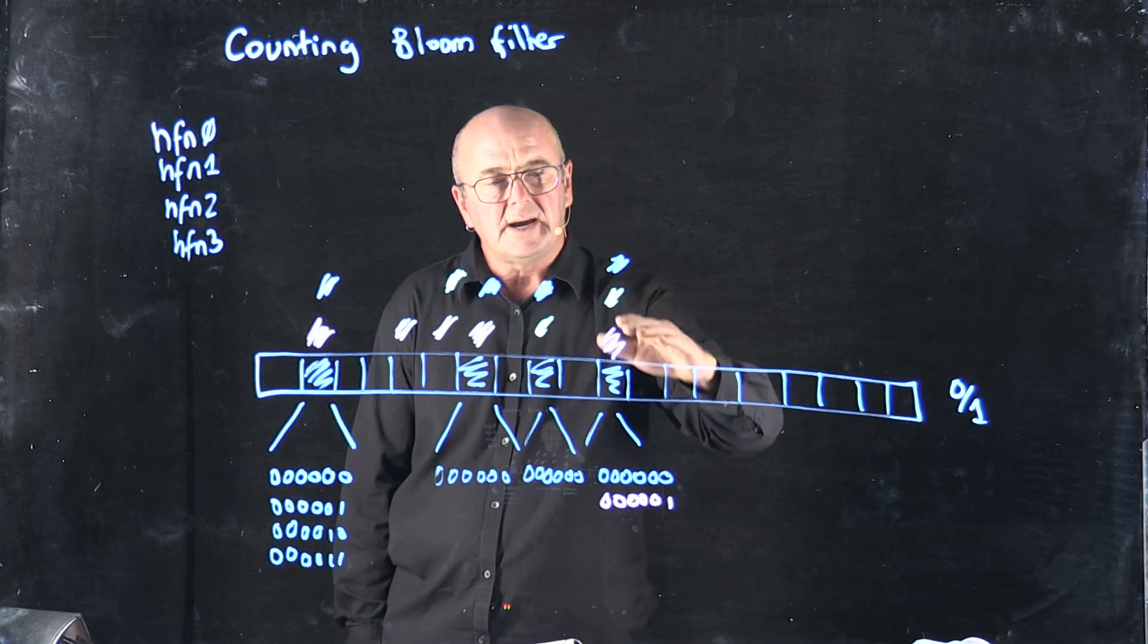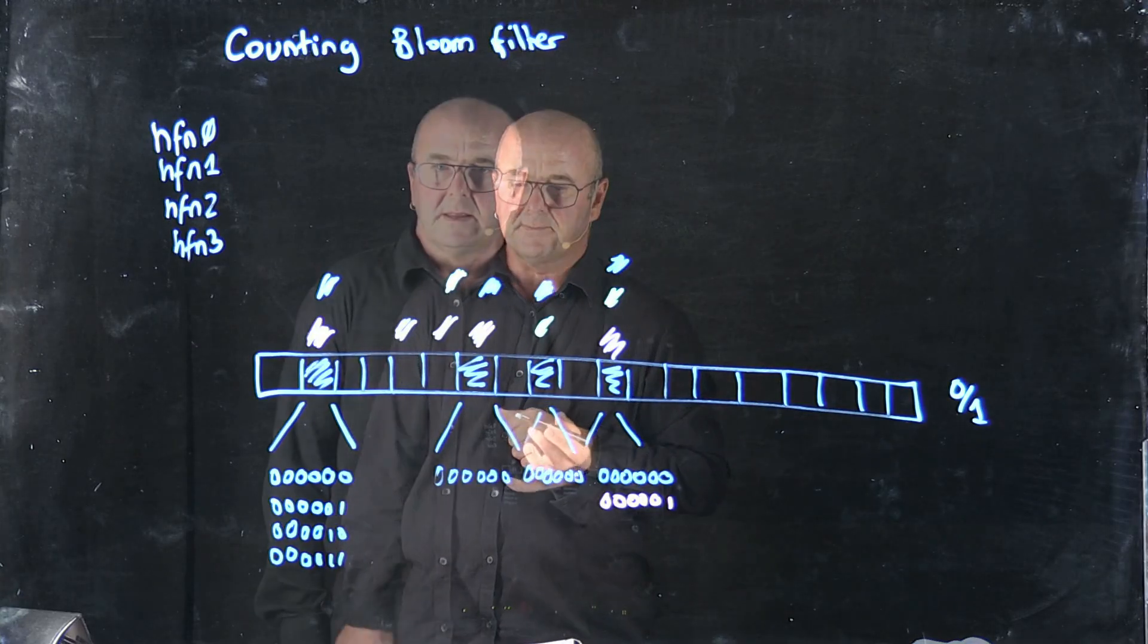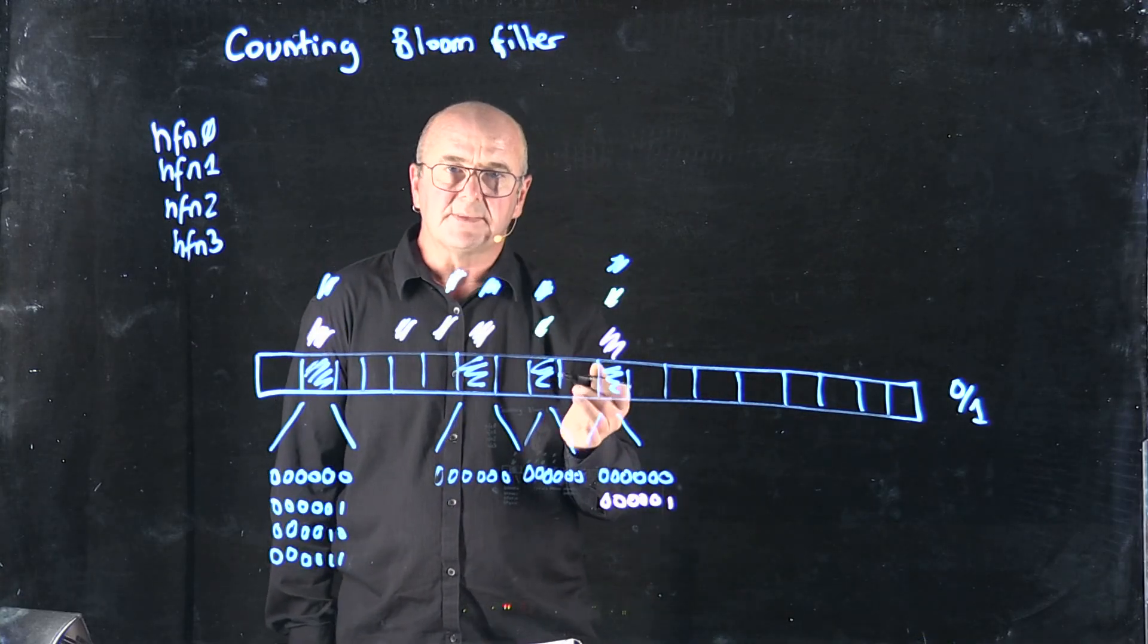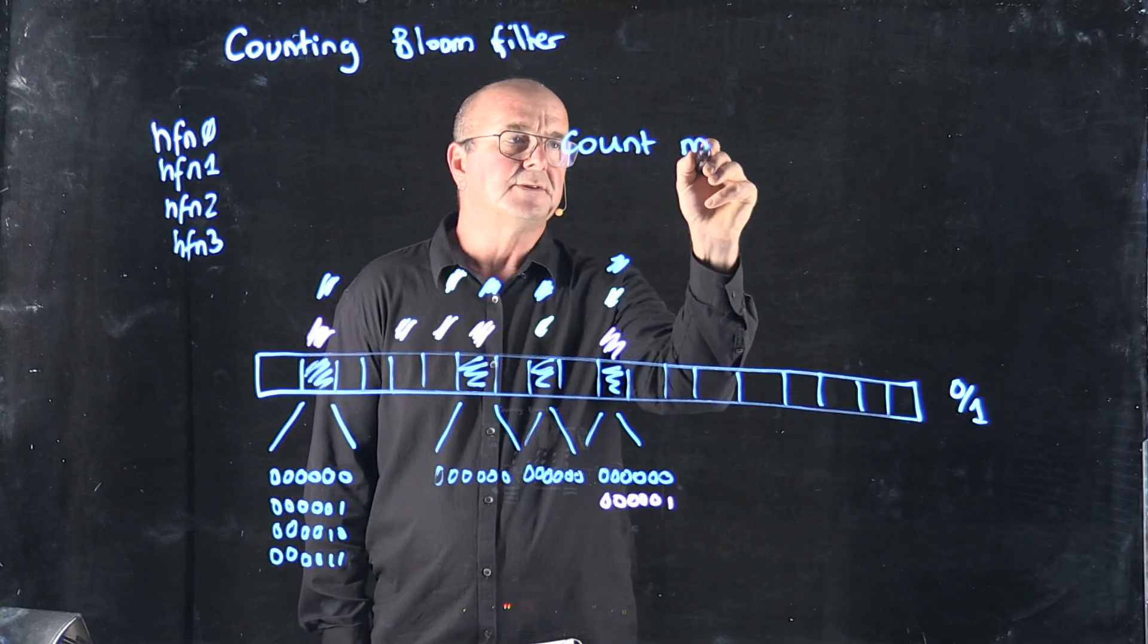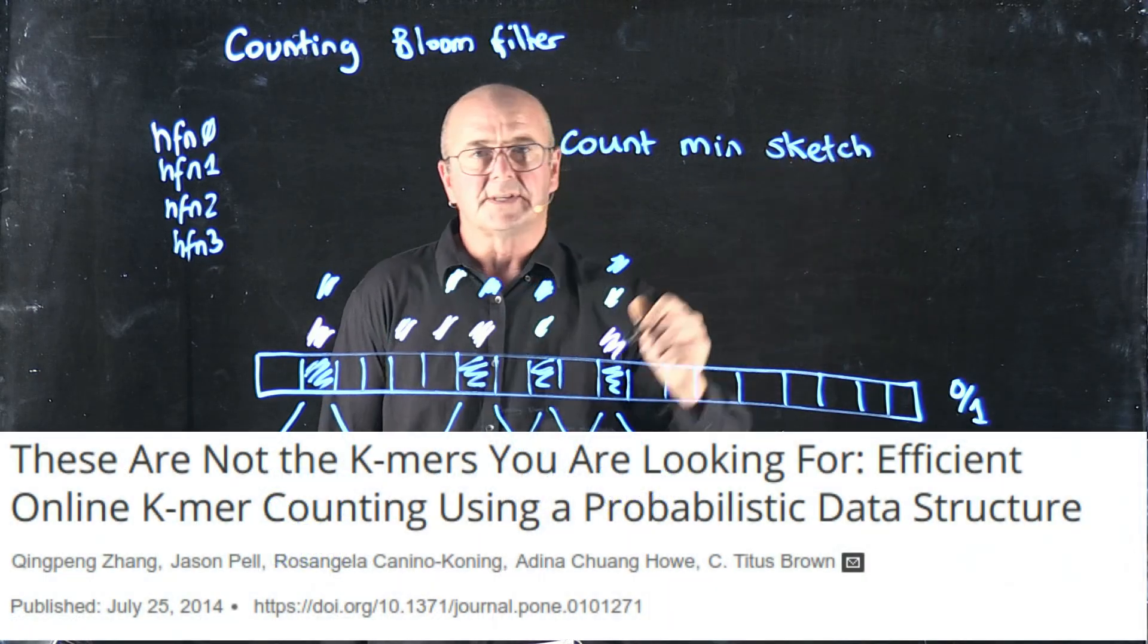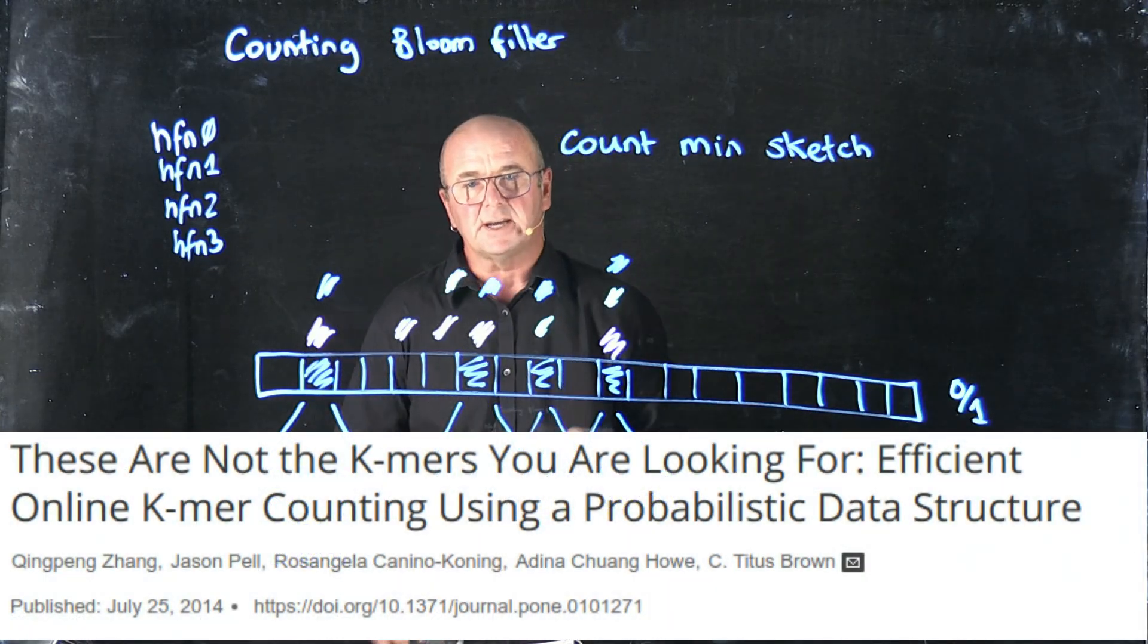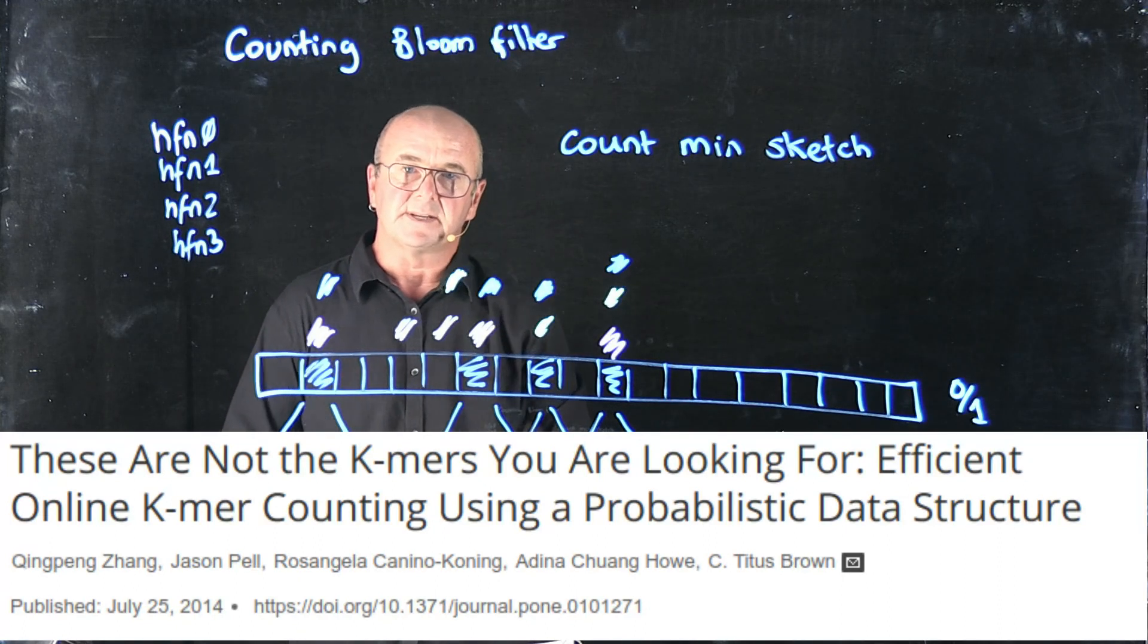However, I kind of have a bound on how many times I've seen something. This is what's called a counting bloom filter. And one of the implementations of this is what's called a count min sketch, which was elegantly implemented by Titus Brown's group and is a really effective way of counting k-mers.